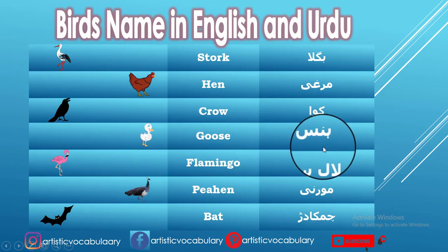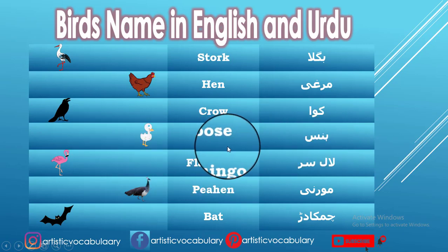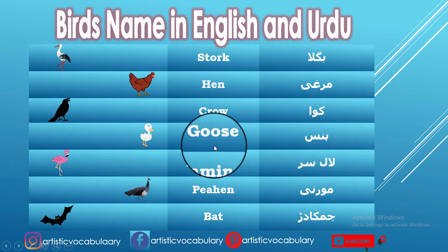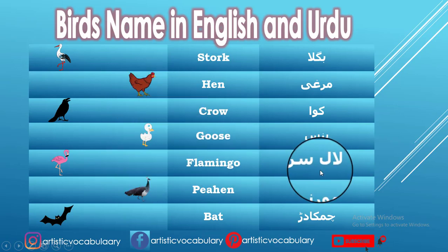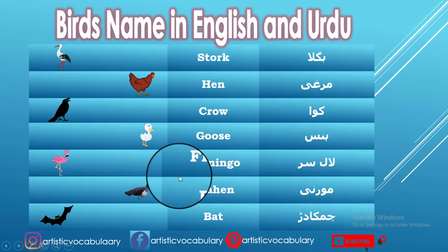Hans — in English we call it Goose. Lalser — in English we call it Flamingo.